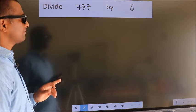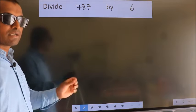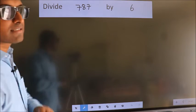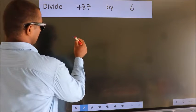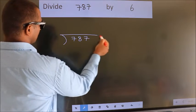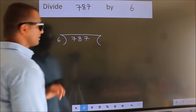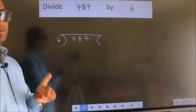Divide 787 by 6. To do this division, we should frame it in this way. 787 here, 6 here. This is your step 1.